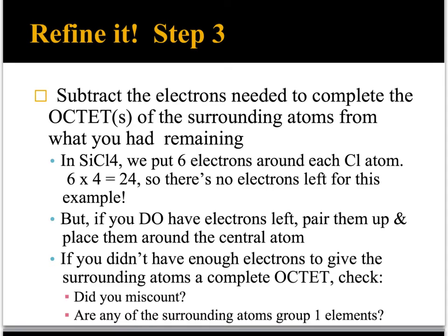In SiCl4, we put six electrons around each chlorine, so there's no electrons left in this example. If you do have electrons left, you need to pair them up and place them around the central atom. If you didn't have enough electrons to give the surrounding atoms complete octets, you need to check: did you miscount, or are any of the surrounding atoms elements from group one? Hydrogen, lithium, sodium, potassium, and so on. Those elements don't need to have an octet.